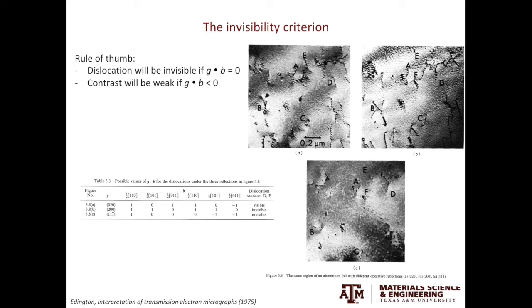Here is a very nice example from Edington's book. By selecting different g vectors, you can make some dislocations visible while others invisible. To determine the Burger's vector of each dislocation, what you can do is list out all the g vectors you used and also all the possible Burger's vectors. Then you construct the g·b matrix to determine which ones are zeros and which ones are non-zeros. From this, you can deduce the exact Burger's vector of each dislocation line.